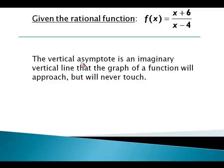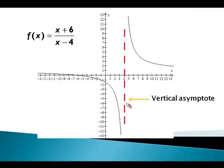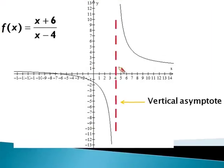So a vertical asymptote is an imaginary vertical line that the graph of a function will approach but never touch. So if you look at this graph here, you'll notice my curve, if I come from the right to the left, I'm approaching this dotted line but I never actually touch it. As I approach this dotted line from the left, I'm getting closer to it but I never actually touch it.